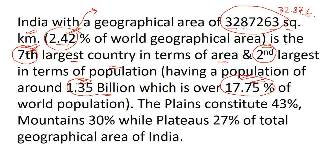The plains in India constitute around 43% of the geographical area — so most of the geographical area is covered by plains — followed by the mountains, which account for 30% of the geographical area of India.